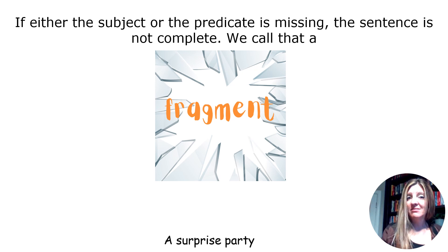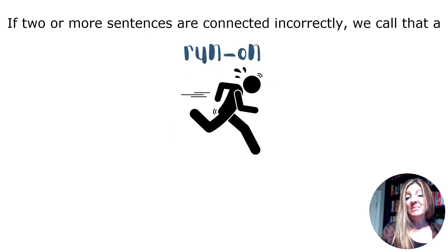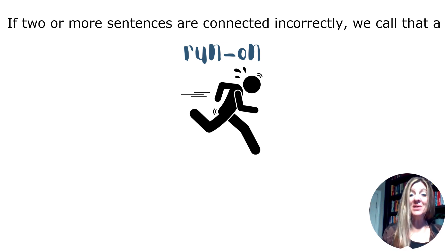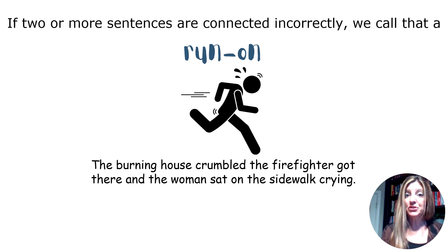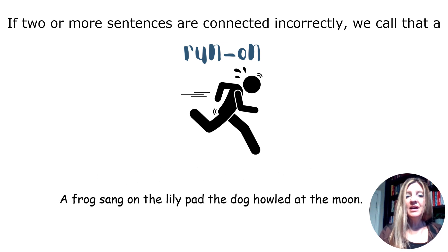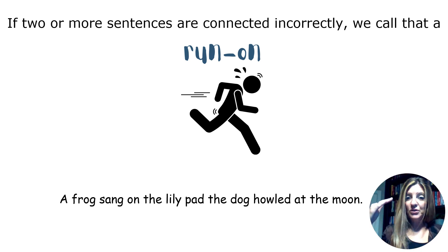How about 'a surprise party'? Why? Right? So let's look at what happens when we push lots of sentences together and don't correctly punctuate them — no capital and no end mark. We call that a run-on. Listen to these sentences: 'The burning house crumbled, the firefighter got there, and the woman sat on the sidewalk crying.' I make a big deal of — I don't know when to take a breath, I don't know where to start and stop. It's just exhausting and hard to read. 'A frog sang on the lily pad and the dog howled at the moon.' I'm in cognitive overload trying to figure that out, and I can't really comprehend what is actually happening in the sentence.